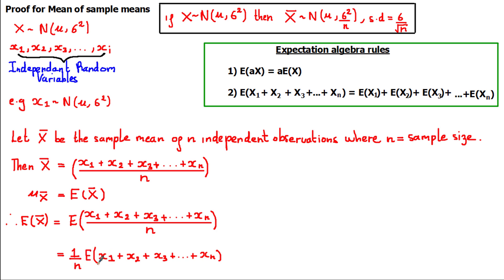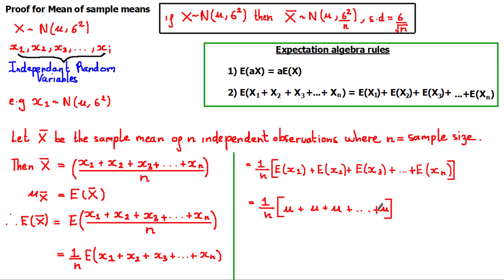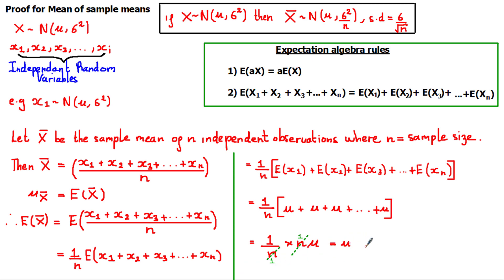We get 1 over n times the expected value of the sum of n independent observations. Using property 2, we rewrite the expected value of the sum as the sum of expected values. Since each observation comes from x and has the same mean mu, each expected value equals mu, giving us 1 over n times mu plus mu plus mu and so on. Since we took the expected value of n observations, we're adding mu to itself n times, giving 1 over n times n times mu. The n terms cancel, giving us mu — which proves that the mean of the sample means equals the population mean.